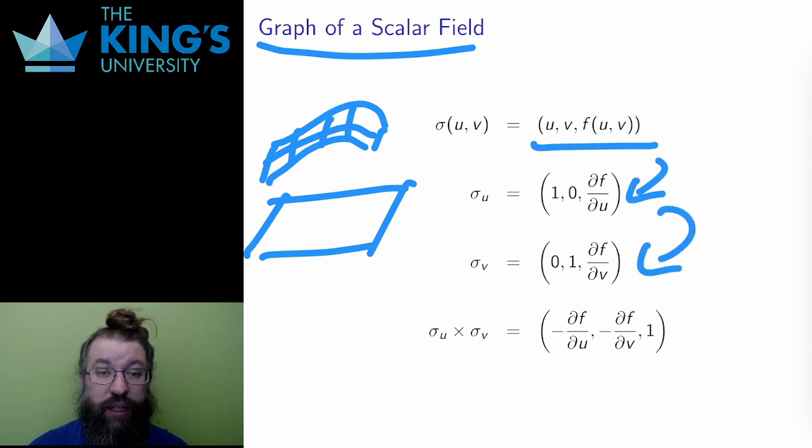Since u and v act like x and y in the domain of the scalar field. Well, then I take the cross product of these two and get this result.